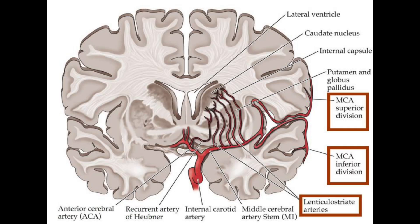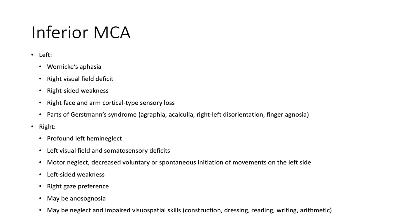Infarcts in the inferior division of the MCA look different depending on which side is affected. Left-sided infarcts cause fluent or Wernicke's aphasia and a right visual field deficit. There might also be some mild right-sided weakness, especially at onset of symptoms, and some right face and arm cortical-type sensory loss. Patients can also have symptoms of Gerstmann's syndrome, because these symptoms stem from damage to the parietal lobe in the dominant hemisphere, particularly the angular gyrus and adjacent structures. Motor findings are usually absent, but patients may initially seem confused or wacky but otherwise intact unless carefully examined.